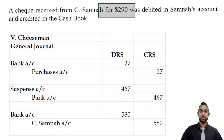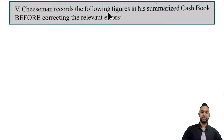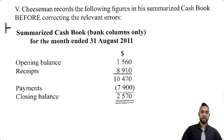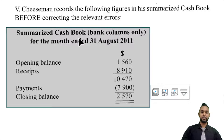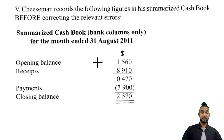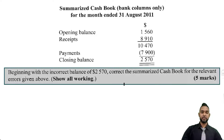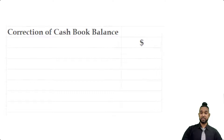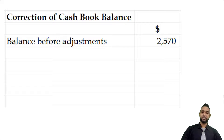That's the first part of the question. Let's take a look at the second part. V. Cheeseman records the following figures in his summarized cash book before correcting the relevant errors. The summarized cash book shows bank columns only for the month ended 31st August 2011: opening balance plus receipts gives total money available, minus payments gives the closing balance. Beginning with the incorrect balance of $2,005.70, we need to correct the summarized cash book for the relevant errors.